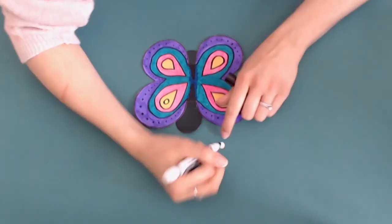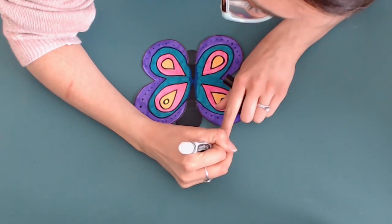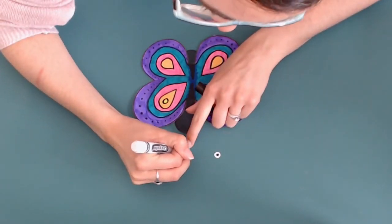So I'm just going to color in some pupils on my eyes and then go ahead and attach them to my butterfly.